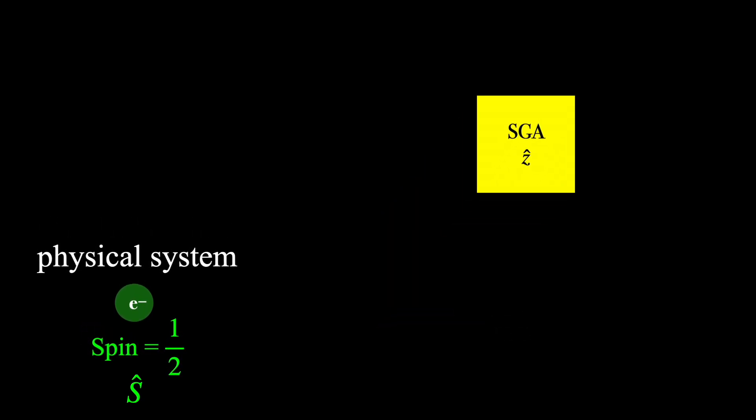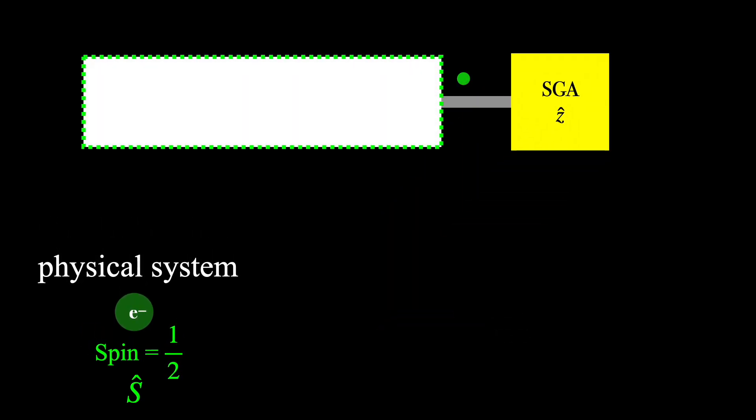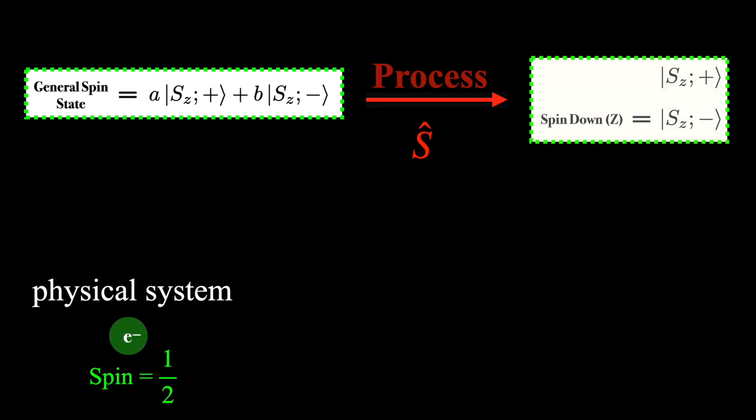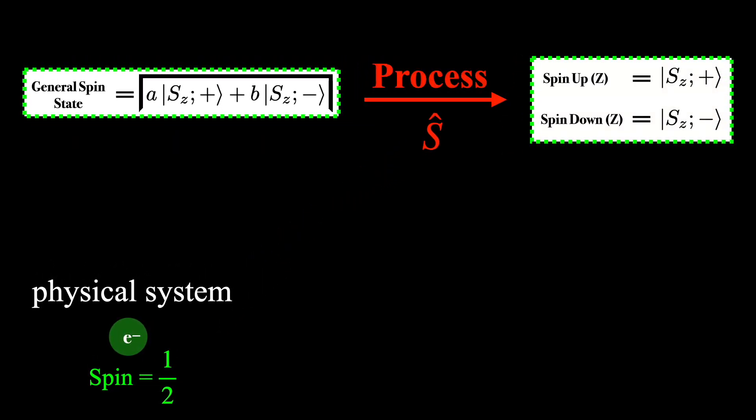Now before the measurement is made, the spin state of the electron can be described by the following ket. If it's then sent into the measuring apparatus, it will come out in one of these definite states, either spin z up or spin z down. So there is some process going on that takes the electron from being in this initial state to one of the final states, and it is this process that we are trying to capture with the spin operator.